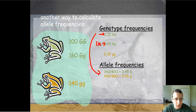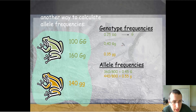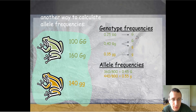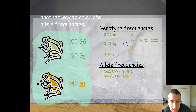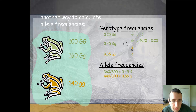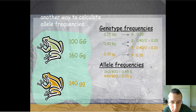Let's show how this shortcut works. Because big G, big G only has big G alleles, and the heterozygous has both, and homozygous recessive only has little g, you count the homozygous dominant ratio completely and half of the heterozygous ratio toward big G. That gives 0.25 plus 0.2, which equals 0.45. For little g, you take half of the heterozygous ratio — 0.2 — plus all of the homozygous recessive ratio — 0.35 — which gives 0.55.